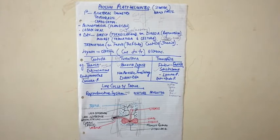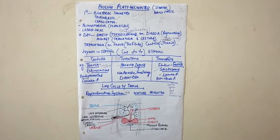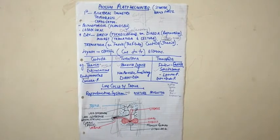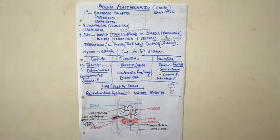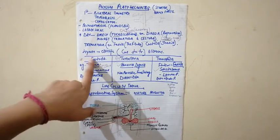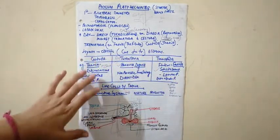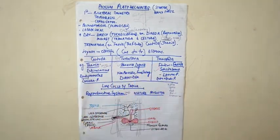This is just a brief overview of this phylum. Development is either direct or indirect — this is the most important part. Hyman was the scientist who classified this phylum into three classes: Cestoda, Turbellaria, and Trematoda.